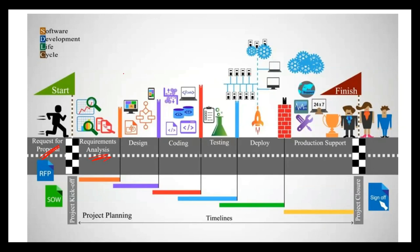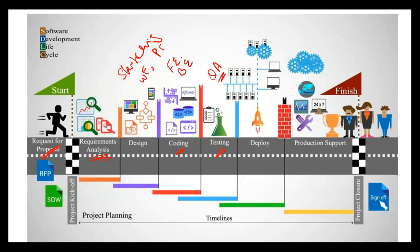Then comes the Design phase, which includes three parts: sketching, wire framing, and prototyping. After that is the Coding phase, comprising your front end and back end. Then comes the Testing phase — your quality assurance phase — which involves different types of tests: manual tests, automatic tests, unit tests, and integration tests. If your application passes 90% of the tests, it is considered a fit application.